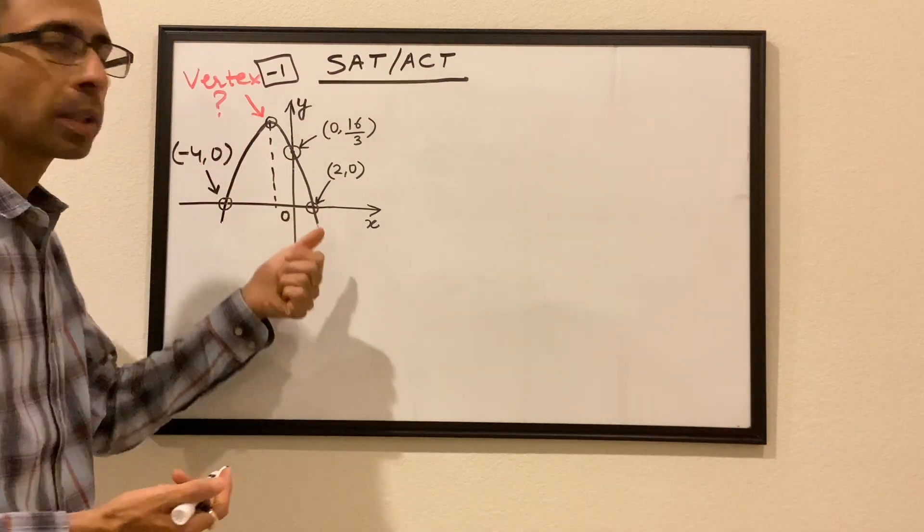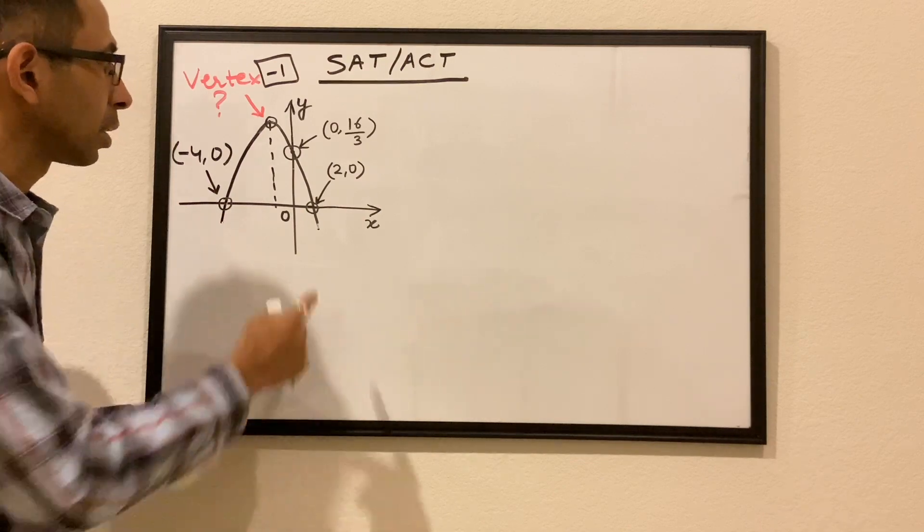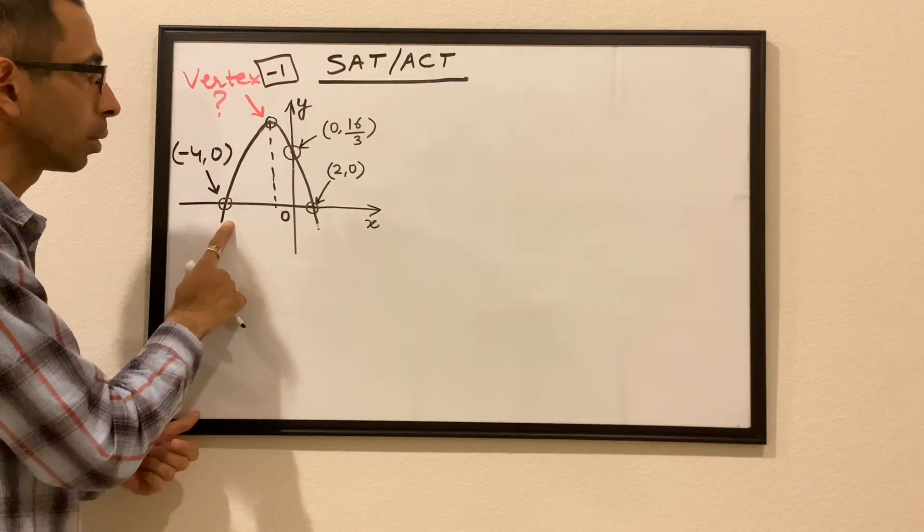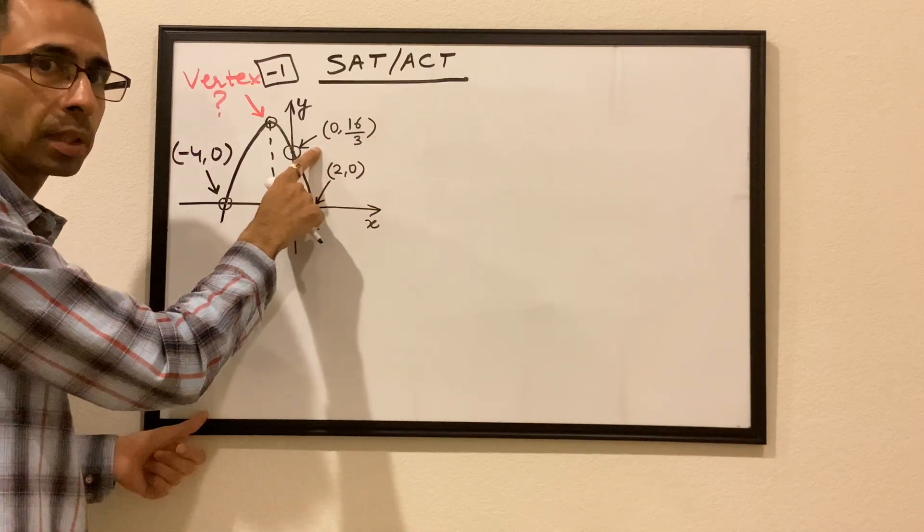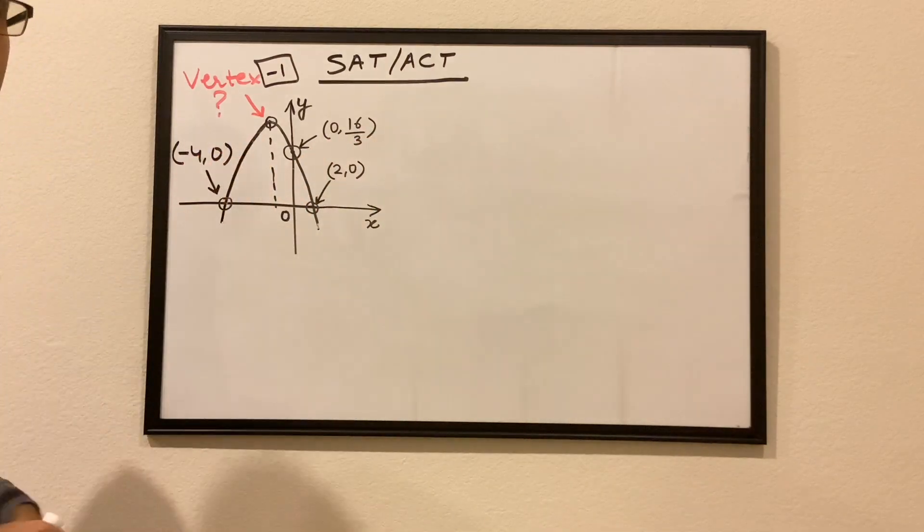So we have a parabola as shown on the board. The parabola has two x-intercepts, 2,0 and -4,0. Even the y-intercept of 0,16/3 is also given and we have to find the vertex of the parabola.